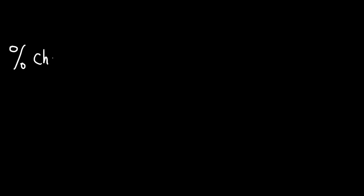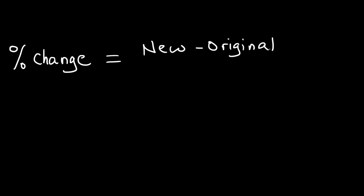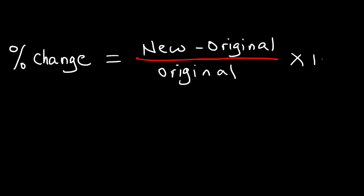In this video, we're going to talk about percent of change and how to calculate it. So the first thing we need to do is talk about the formula. It's basically equal to the new value minus the original value, divided by the original value, multiplied by 100%.